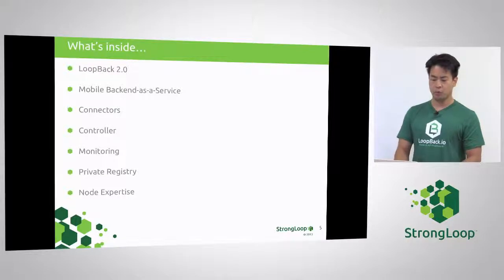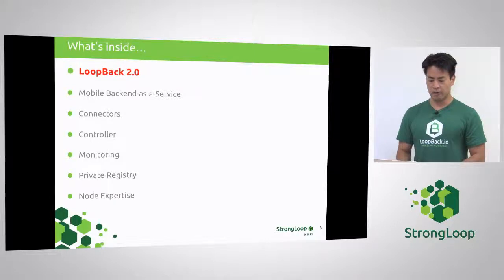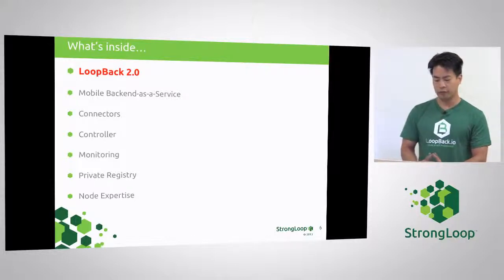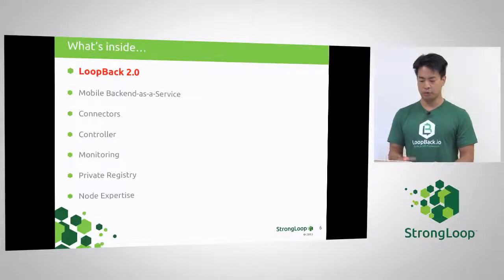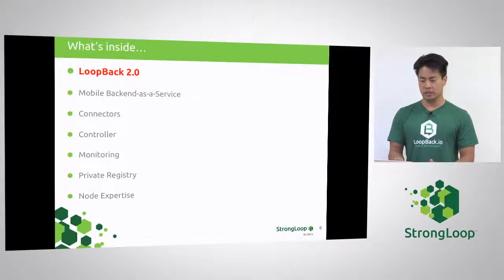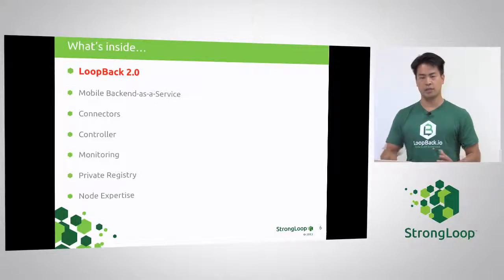Let's take a look at what's inside the Strongloop API server. When we launched as a company, we developed a framework called Loopback. We also have mobile backend as a service built on top of Loopback. We've refactored out these mobile backend services to be separate from Loopback for those folks using Loopback for next-gen web who don't care about mobile clients and push services. We also have connectors to bridge the divide between existing data and services for backend systems. And we're building a controller to help with going from dev to stage to production, which has never been easy for Node.